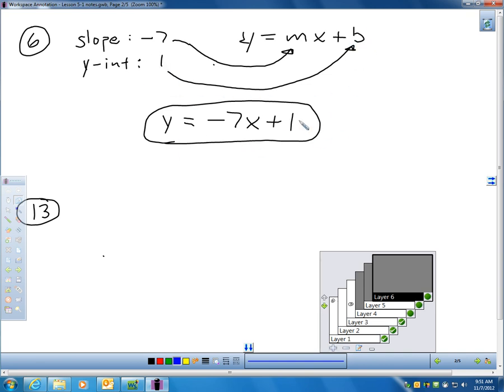There's my equation. Y equals negative 7X plus 1. This is the equation for a line with that particular slope and Y-intercept.